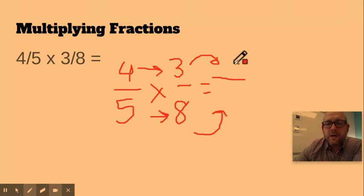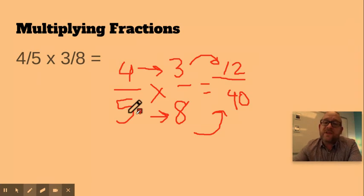So four times three will become 12 and five times eight would become 40. So four fifths times three eighths or four fifths of three eighths is going to be 12 forties. A few things to note here.